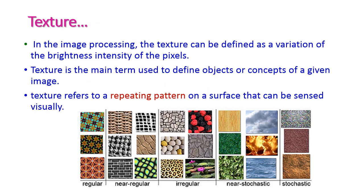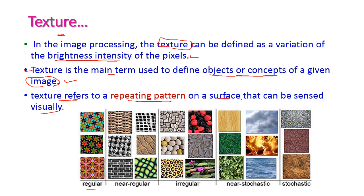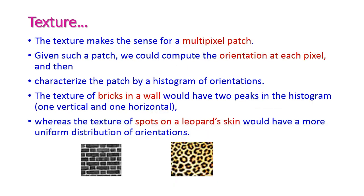Texture: in image processing, texture is defined as the variation of brightness intensity of the pixels. Texture is used to define objects or concepts of a given image. Texture is nothing but the repeating pattern on the surface of the image that can be sensed visually. There are different types of textures: regular, near regular, irregular, near stochastic, and stochastic.